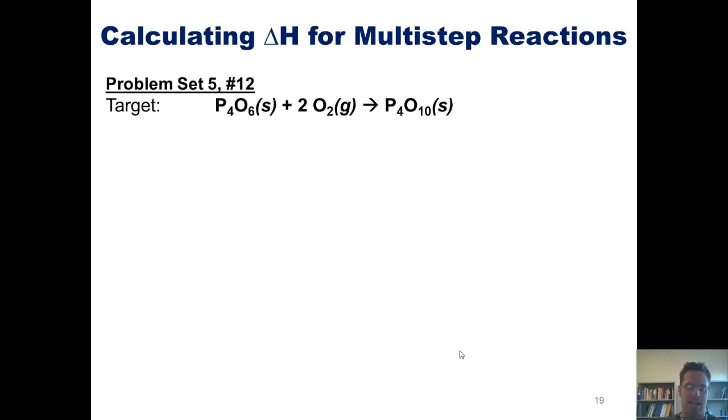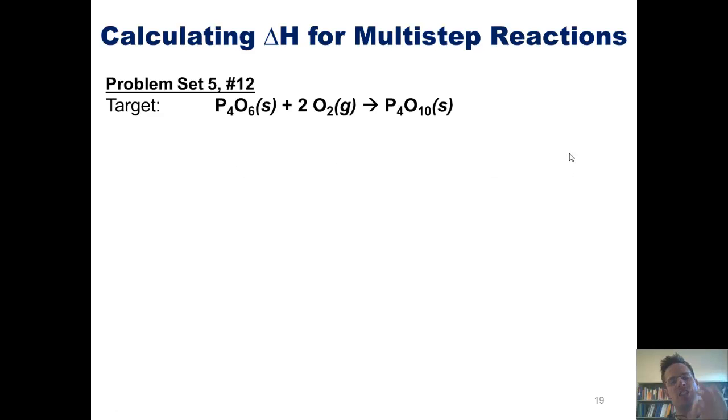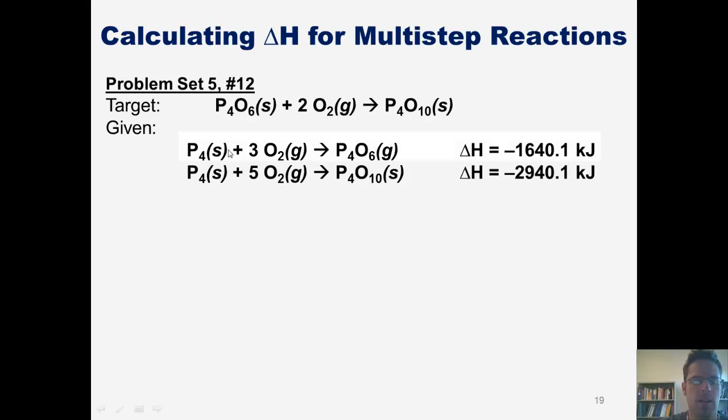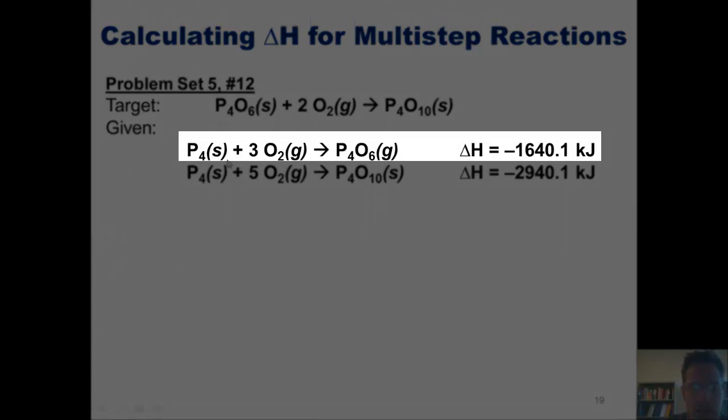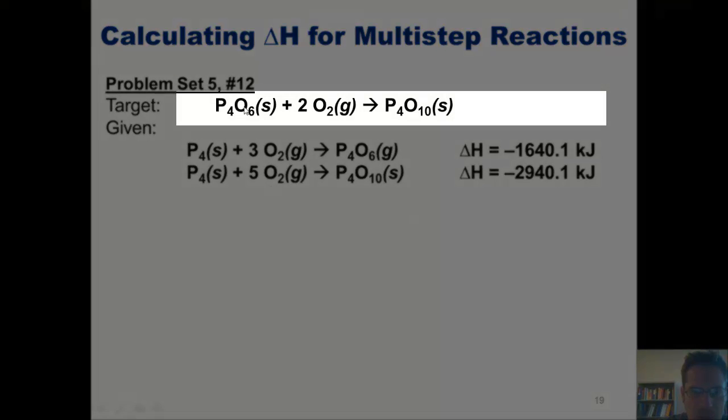Here is our target reaction given in our original problem. And here are the two individual stepwise reactions we were given. Now you'll note, looking at this equation up here, that P4 plus 3O2 gives P4O6 with the following delta H. If we compare this first equation with the equation that's shown up at the top, you'll note that P4O6 appears on the left side of the reaction at the top that we're trying to get to, but on the right side of the reaction that we've been given.